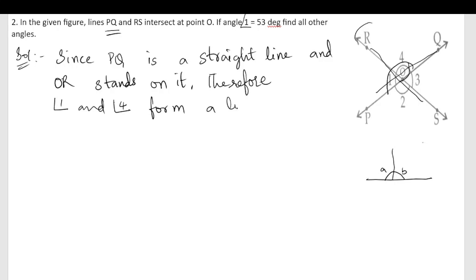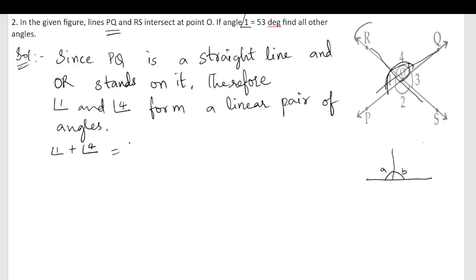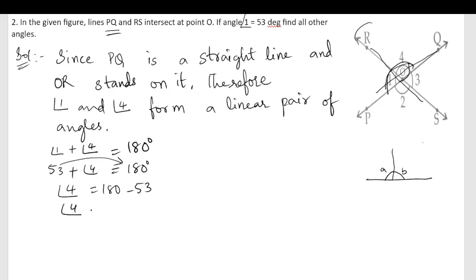Since angle one and angle four form a linear pair, the sum of angles in a linear pair is 180 degrees. So angle one plus angle four equals 180 degrees. Angle one is 53, so 53 plus angle four equals 180 degrees, which gives angle four equals 127 degrees.